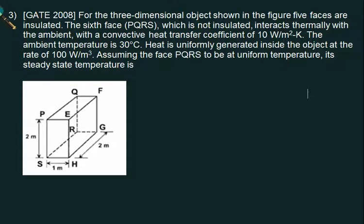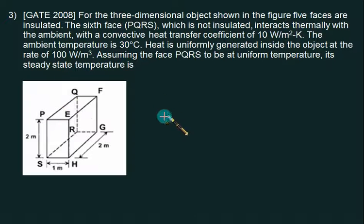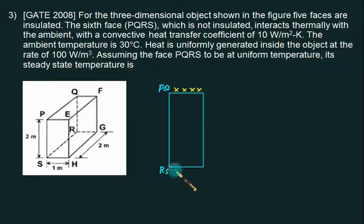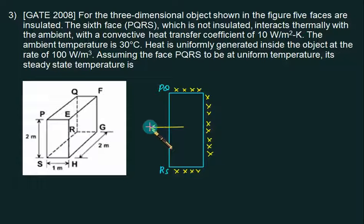In this question we are given a three-dimensional object as shown in the figure. Out of six faces, five faces are insulated and only the face PQRS is not insulated. In the front view you can get P, Q, R, S. The top surface, right surface, and bottom surface are all insulated. Therefore the heat will transfer only on the left-hand side because the rest of the surfaces are insulated.